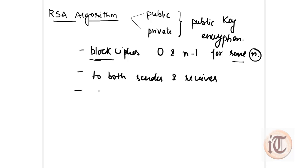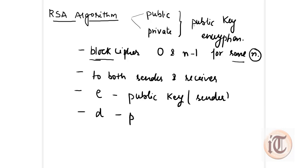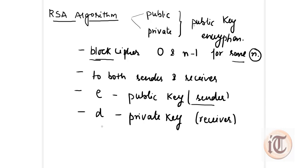The sender also knows the value of e, which is the public key. The value of d is the private key, and only the receiver knows this private key to decrypt the message. So the value of e, the public key, is known to the sender, and the value of d, the private key, is only known to the receiver.